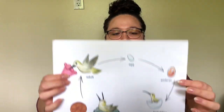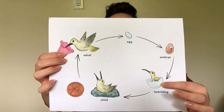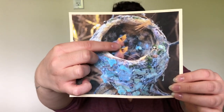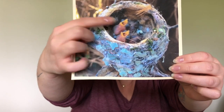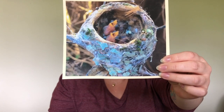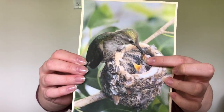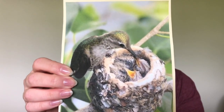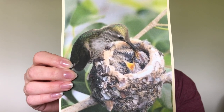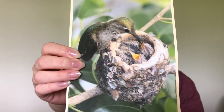After the egg, do you remember what comes next? The hatchling — when the baby hummingbird breaks out of the shell and enters the world. Here you can see two little hatchlings. The mother bird feeds these little babies nectar and insects. The way she does that is by putting her bill inside their mouth and feeding them food, so that the baby birds can start to grow and get strong.